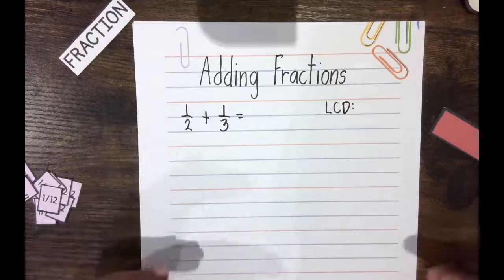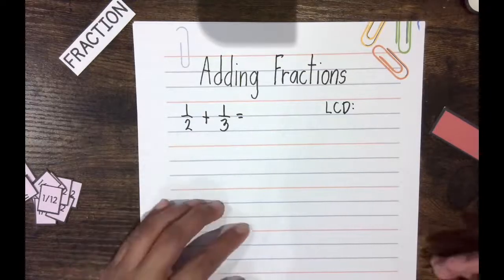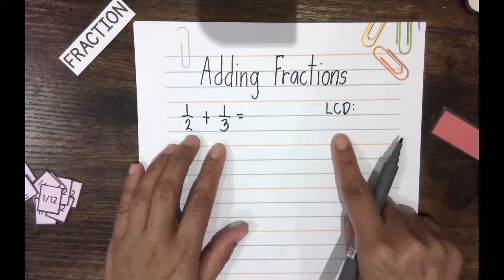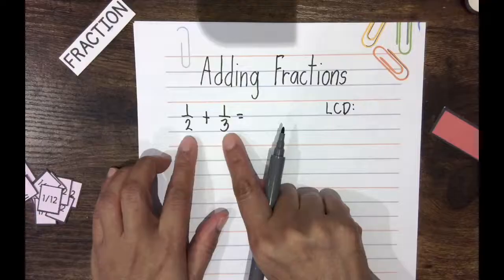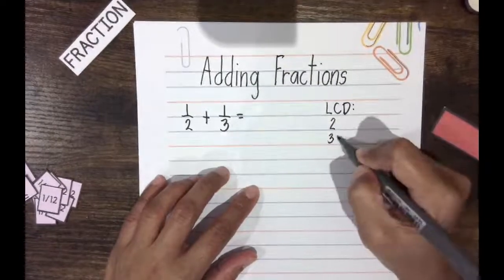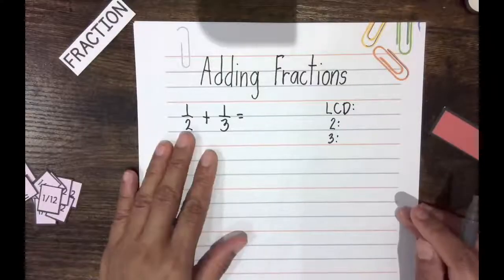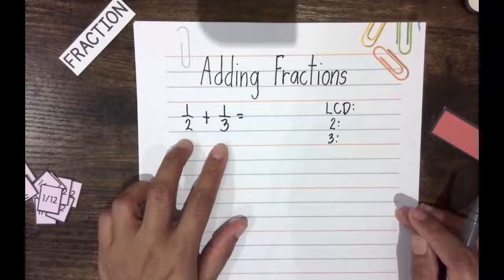So LCD basically means the least common multiple of the two denominators of the fractions that you are trying to add. So here the denominators are 2 and 3. You can find the LCD by finding the least common multiple of the two numbers.